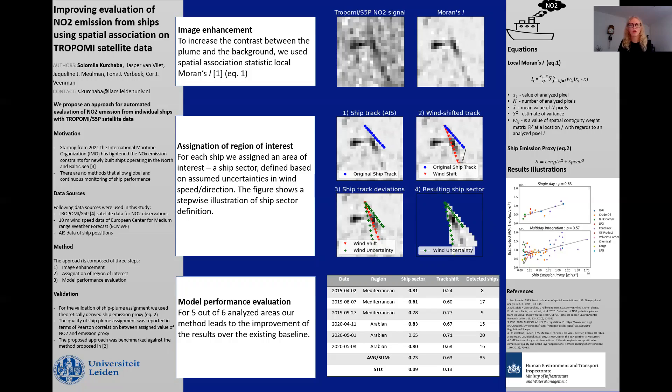The first problem is how to enhance satellite image. For this purpose, we applied spatial association statistic local Moran's I. The statistic allows to enhance clusters of high-value pixels and to discard random co-occurring peaks without blurring the image. This way more ships can be distinguished.